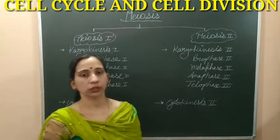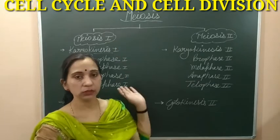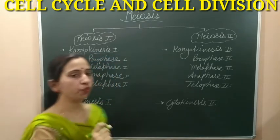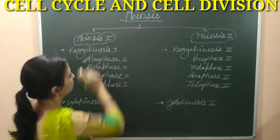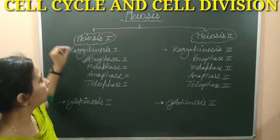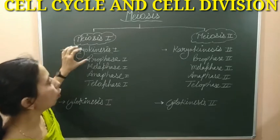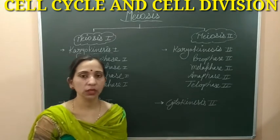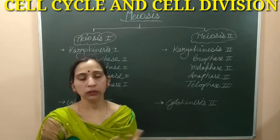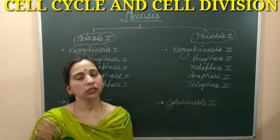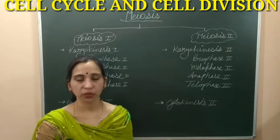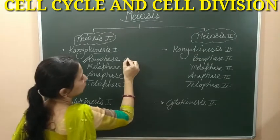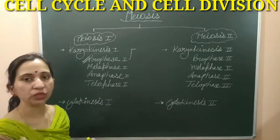In meiosis 1, the prophase 1 is the very longest sub-phase — the longest phase. This prophase 1 is further divided into sub-phases with particular names. Let's discuss what are the names of these sub-phases of prophase 1.